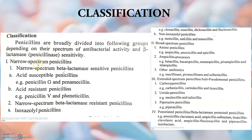The narrow-spectrum penicillins are now completed and we are moving to the broad-spectrum penicillins. They are classified into three groups. The first is aminopenicillins, which includes ampicillin, amoxicillin, and epicillin — amoxicillin and ampicillin are very well known. The ampicillin precursors include hetacillin, bacampicillin, metampicillin, pivampicillin, and talampicillin. Other antibiotics in this group are mecillinam, pivmecillinam, and sulbenicillin.